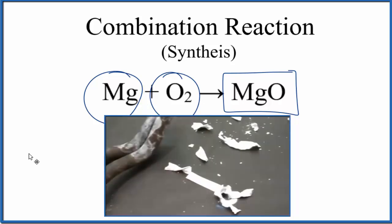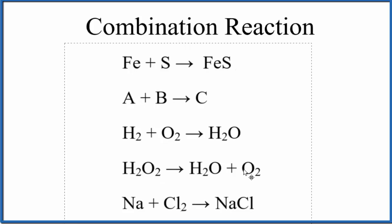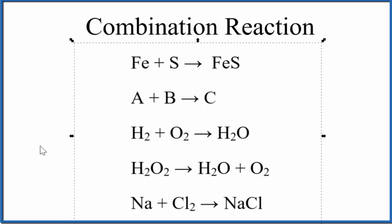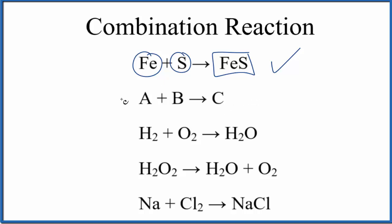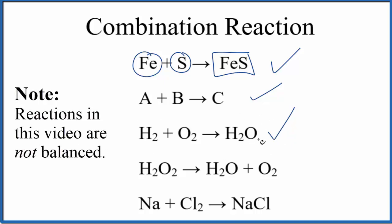Pause and identify the combination, also called synthesis reactions, from the list below. For the first one, we have two things coming together to form one substance — that's a combination reaction. For A plus B yields C, you'll often see combination reactions in this general form. H2 plus O2 yields H2O is also combination. Note, I won't balance reactions in this video, since we really just want to understand the type of reaction.